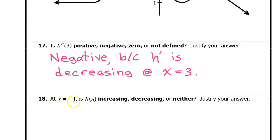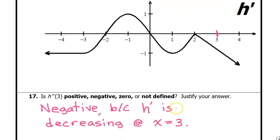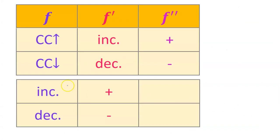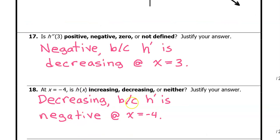Number 18: at x equals negative 4, is h of x increasing, decreasing, or neither? We are given the graph of h prime. If h prime is positive, h will be increasing; if h prime is negative, h will be decreasing. At x equals negative 4, h prime is negative. Therefore, h will be decreasing — because h prime is negative at x equals negative 4.